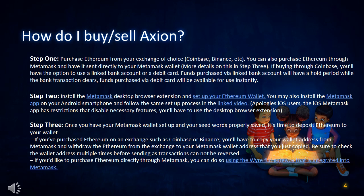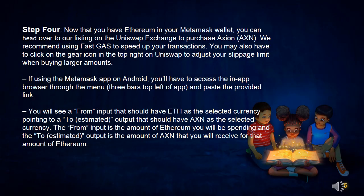If you'd like to purchase Ethereum directly through Metamask, you can do so using their Wyre gateway that is integrated into Metamask. Step 4: Now that you have Ethereum in your Metamask wallet, you can head over to our listing on the Uniswap exchange to purchase Axion. We recommend using FastGas to speed up your transactions. You may also have to click on the gear icon in the top right on Uniswap to adjust your slippage limit when buying larger amounts.